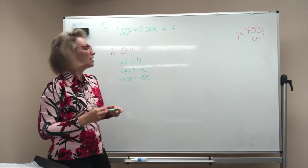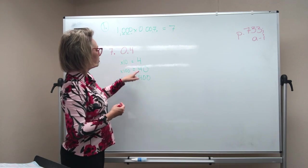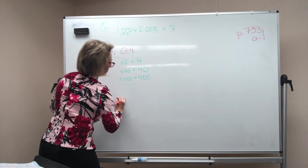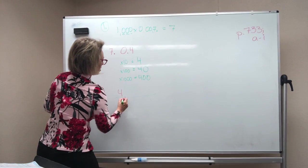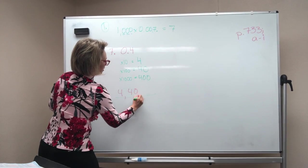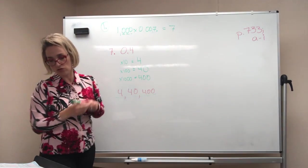So you're going to have, those are your three answers for number seven, four, 40, and 400. Just write it. There's a line like that. And just write four, comma, 40, comma, and 400. And that's how you'll do that one.